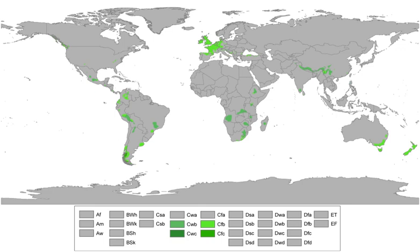Examples of oceanic climates are found in Glasgow, London, Bergen, Amsterdam, Dublin, Berlin, Bilbao, Donostia-San Sebastián, Biarritz, Bayonne, Zurich, Copenhagen, Skagen, and Paris.